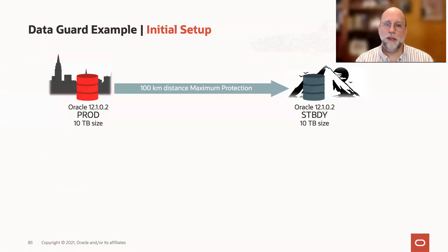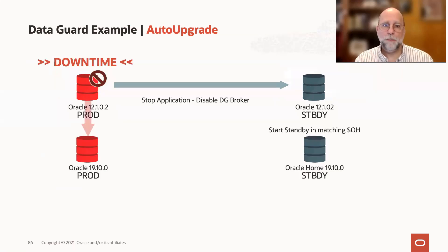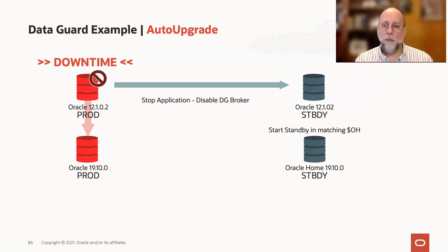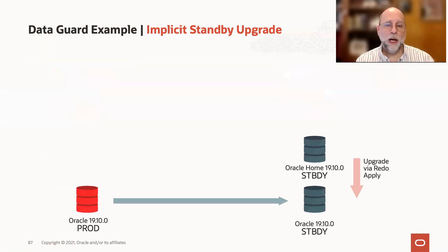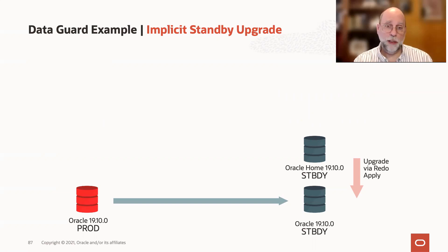Here's the initial setup. Let's say you have a 12.1.0.2 non-CDB with maximum protection and a good geographic distance between sites. For auto-upgrade, we can upgrade your DataGuard environment with one command. You would get downtime on your production system, upgrade it with auto-upgrade, and then your standby — once it's opened in the Oracle Home — will be implicitly upgraded by the redo apply from your primary. All of those upgrade actions from auto-upgrade are contained in the redo that gets shipped to your standby, so it will now be a block-identical copy of your 19C database. That's all non-CDB.